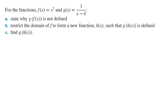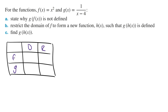For the functions f(x) = x² and g(x) = 1/(x−4), state why g of f(x) is not defined. To state why g∘f(x) is not defined, you need to show that the range of the inner function f(x) is not equal to, or a subset of, the domain of the outer function g(x). To do this, we draw a table and write down the domain and range of each of the functions.